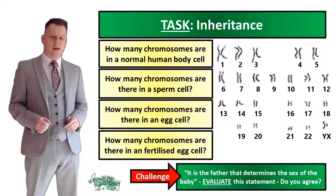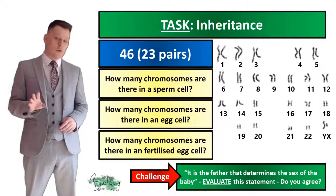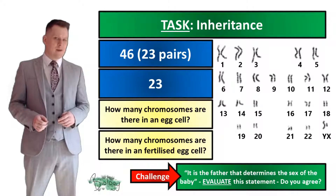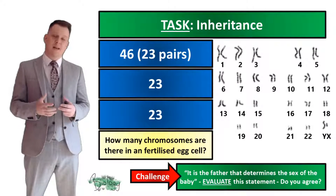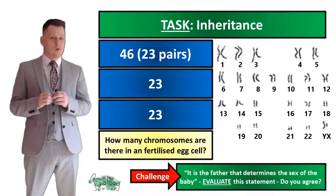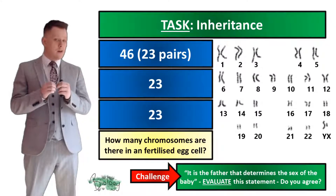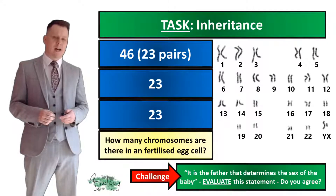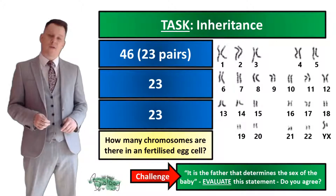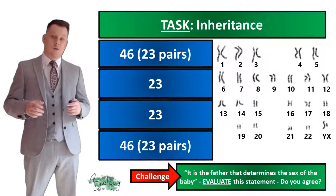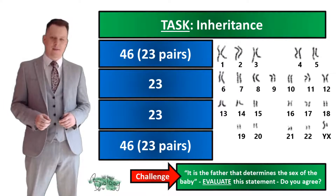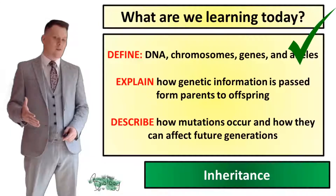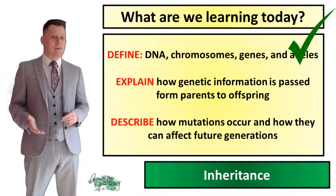In a normal human body cell there are 46 chromosomes or 23 pairs. There are 23 chromosomes in a sperm cell and 23 in an egg cell, because when these sex cells are made, half of the genetic material goes into one cell and the other half into the other. In a fertilized egg cell, 23 chromosomes from the sperm meet 23 from the egg, giving us 46 chromosomes or 23 pairs.